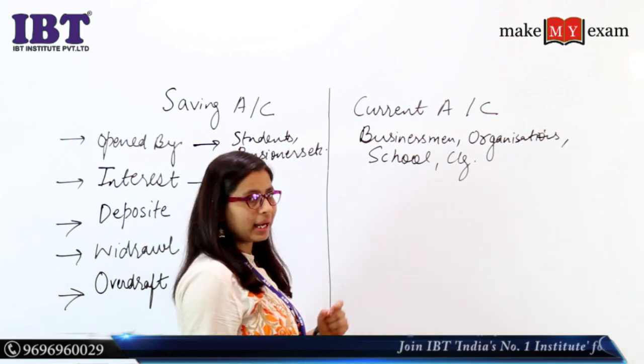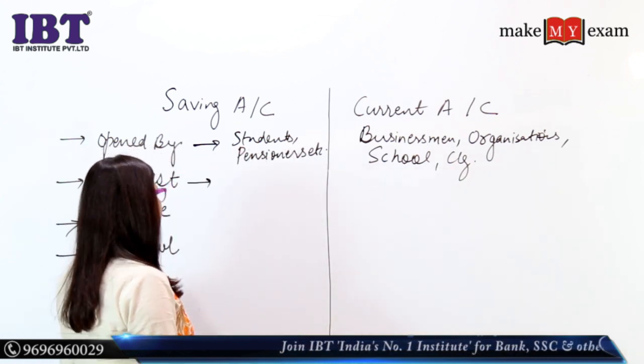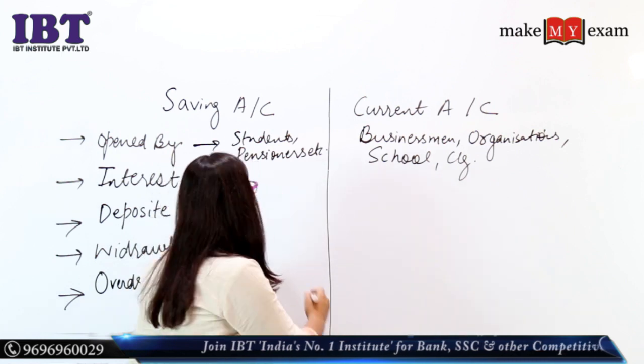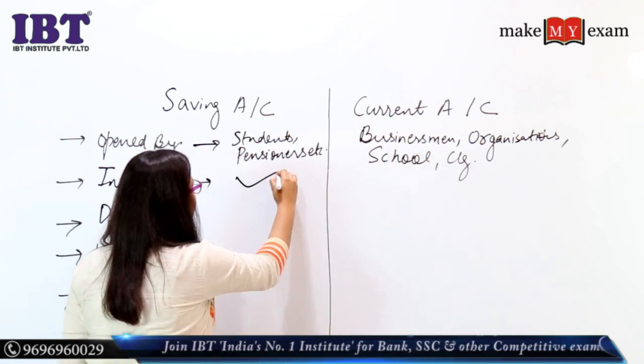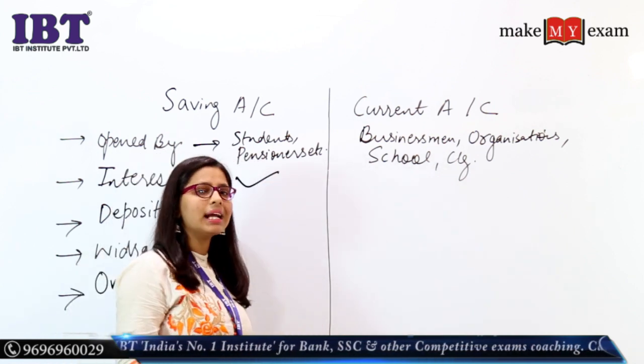Now the next point is interest. In a saving account, interest is provided to account holders, whereas in a current account the interest situation is different.